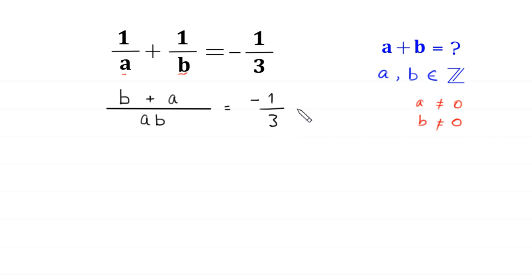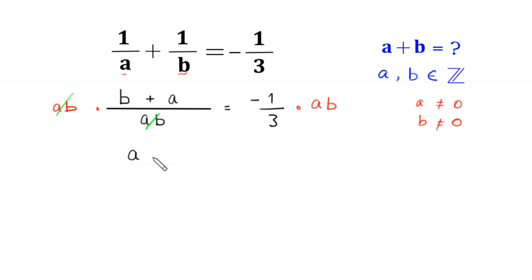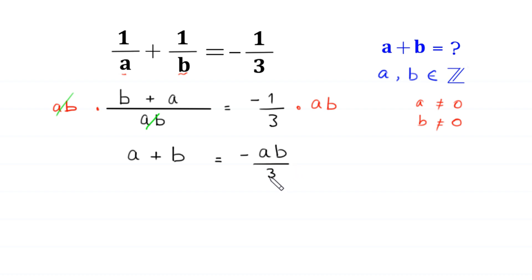We multiply both sides of this equation by a times b. On the left-hand side, we multiply by a times b, so ab will cancel with a, and we are left with b plus a, which is the same as a plus b, equal to negative 1 times ab, that is negative ab divided by 3.